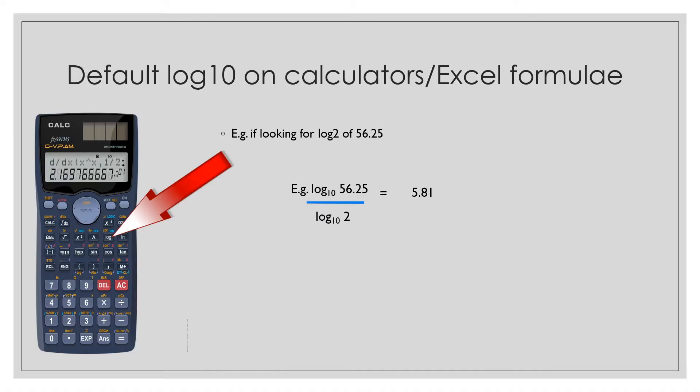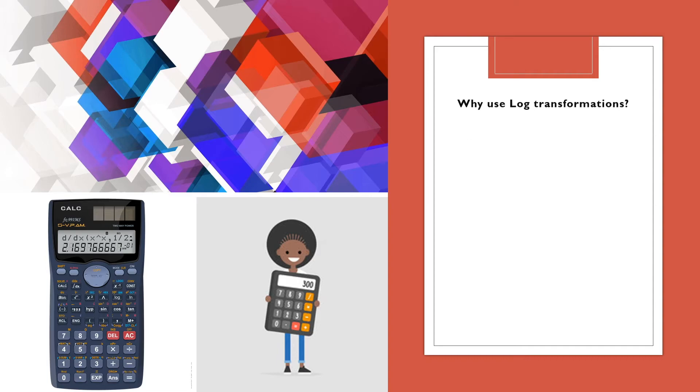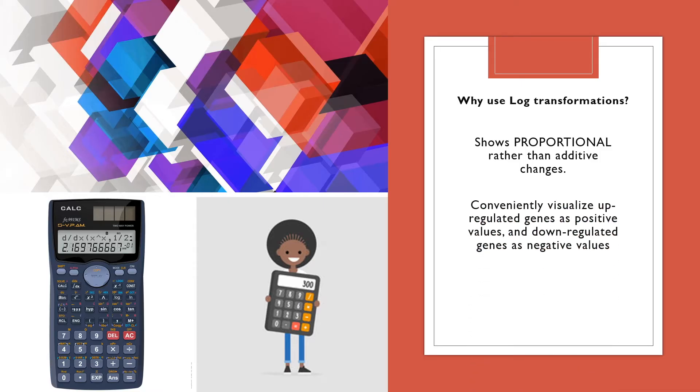I cannot end this video without talking about log transformations. Why do we use this log? I hate when people don't tell me why things are the case, so I wouldn't do that to you. So why do we use log transformations? Using log transformations allows you to show proportional rather than additive changes. It's also really convenient for visualizing up-regulated genes as positive values and down-regulated genes as negative values.